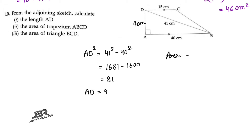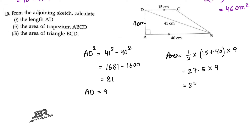Next, the area of the trapezium. Area = half × sum of parallel sides × height = half × (15 + 40) × 9. That gives 55 ÷ 2 = 27.5, then 27.5 × 9 = 247.5. So 247.5 centimeter square is your answer.